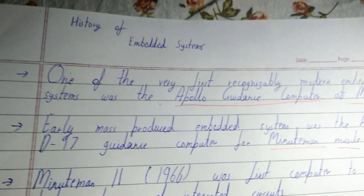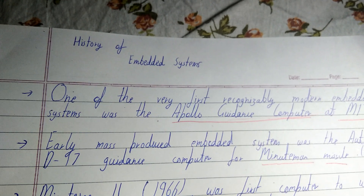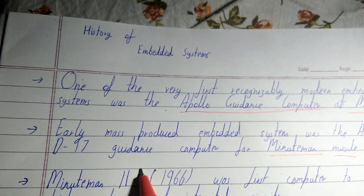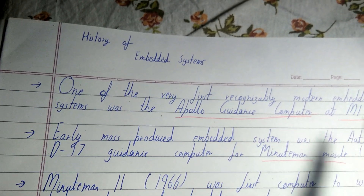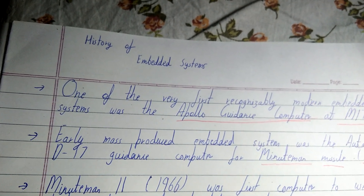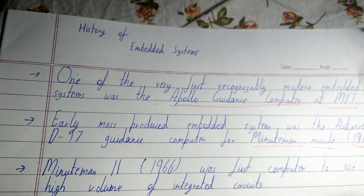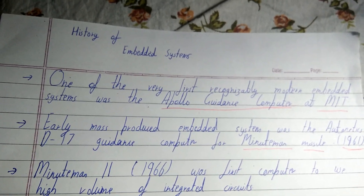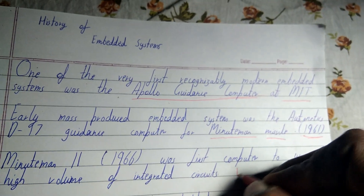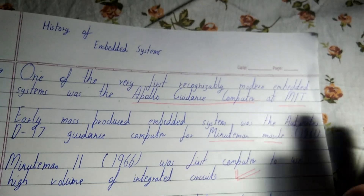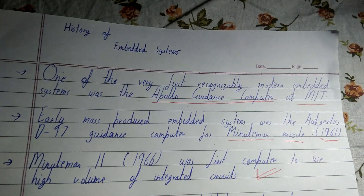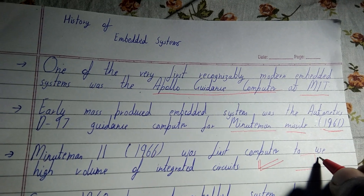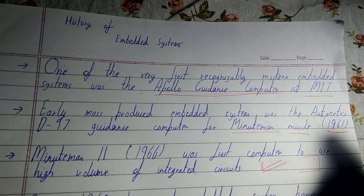After this, the Minuteman 2 missile came in the year 1966. That was the first system to have a high volume of integrated circuits embedded in it, so it can properly be called the first true embedded system. From here, the face of embedded systems changed significantly.